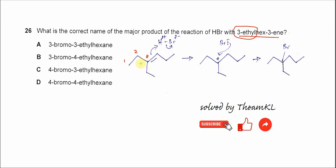So this is 3-ethylhex-3-ene, and this alkene will undergo hydrogen electrophilic addition. So the HBr is added.